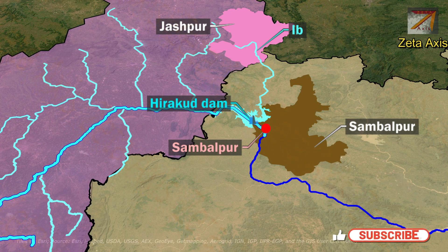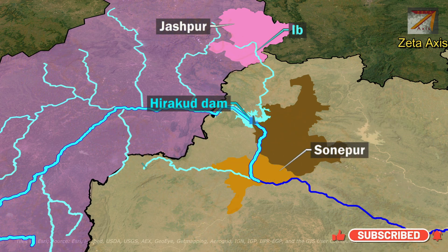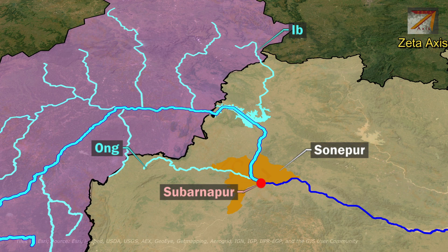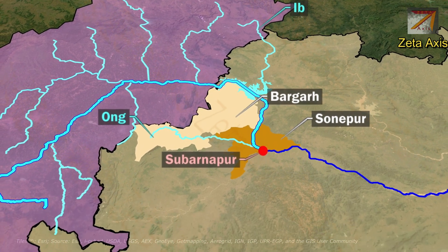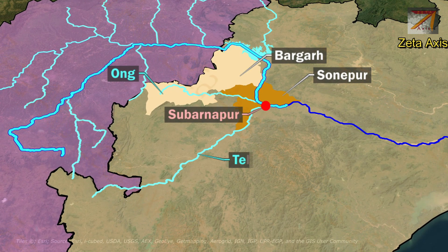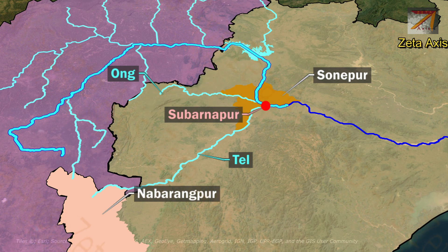From Sambalpur, Mahanadi river enters Sonipur district, where Ong river joins Mahanadi river upstream of Sonipur city. The Ong river originates from Bargar district of Odisha. Just downstream of Sonipur, Tel river joins Mahanadi river. The Tel river originates in the plain and open country of Nabarangpur district of Odisha, close to the Odisha-Chhattisgarh border.